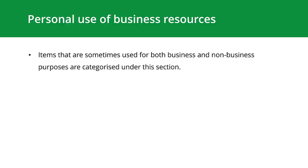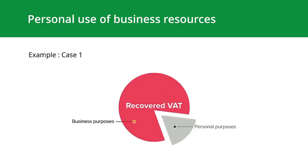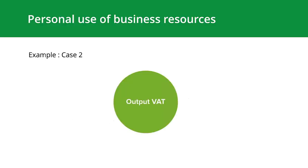Personal use of business resources: items sometimes used for both business and non-business purposes fall under this section. For example, Maria owns a digital print shop and has a printer she uses for both business and personal purposes. She has two options. Option one: she can distribute the input VAT between her personal and business usage and later recover the VAT used for business purposes. Option two: she can claim total input VAT and make an output VAT adjustment wherever the printer has been used for personal use.